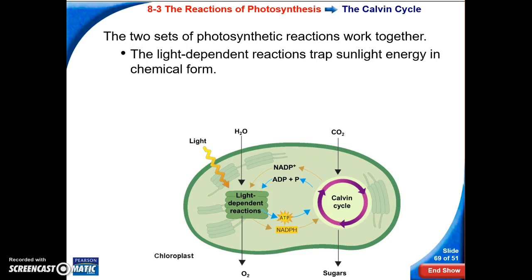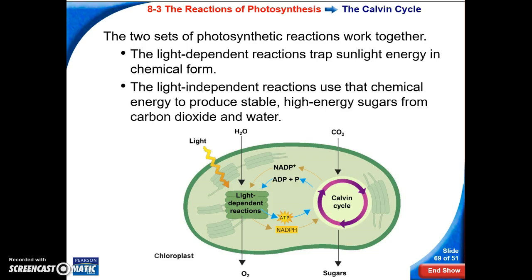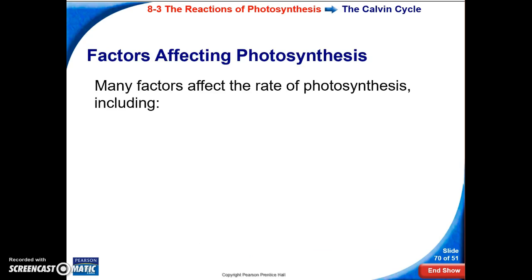The two sets of photosynthetic reactions work together. The light-dependent reactions are trapping sunlight energy in its chemical form. The light-independent reactions are using that chemical energy to produce a stable, high-energy sugar that can be used for storage or for nutrition for a heterotroph. They're doing that using carbon dioxide and water.